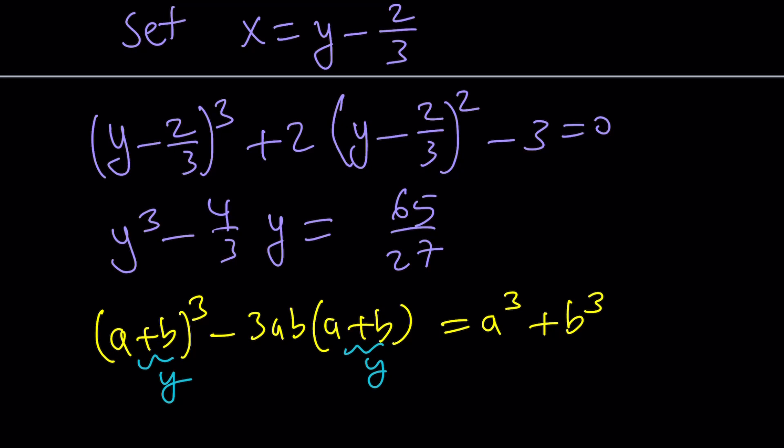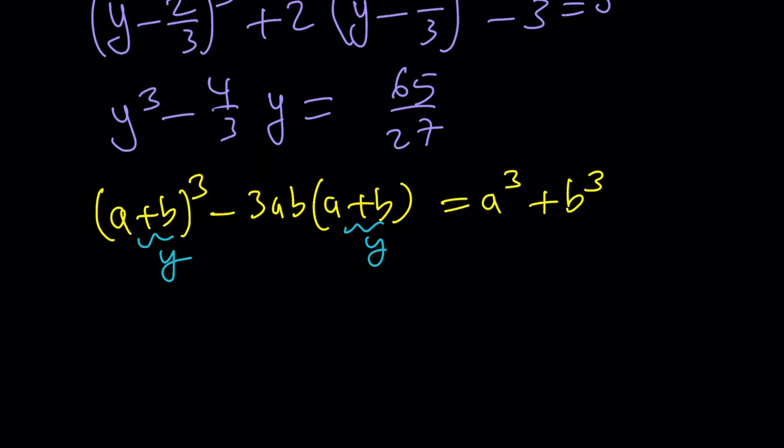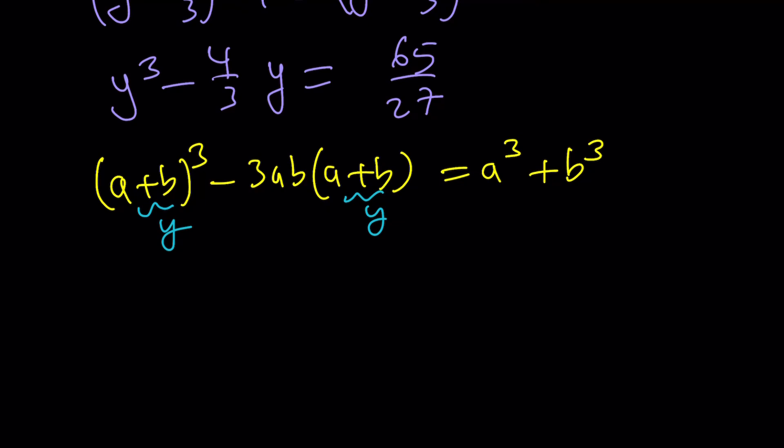And then calling this a plus b thing y, you are coming up with the cubic formula, or the method for solving cubics in general. And then from here, we get the following. The coefficient of y is the coefficient of y here, so these two things are the same, which means ab is equal to four-ninths.